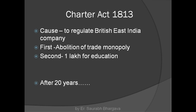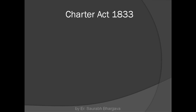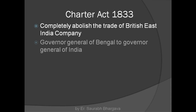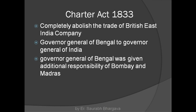After 20 years, another act was enacted: Charter Act 1833. In that, they completely abolished the trade of the British East India Company. The Governor General of Bengal was converted into the Governor General of India. All the powers of the Bengal Governor were given to the Governor General of India, and the power of the Governor General was enhanced to include Bombay and Madras.